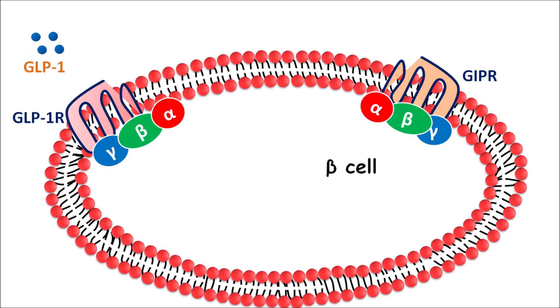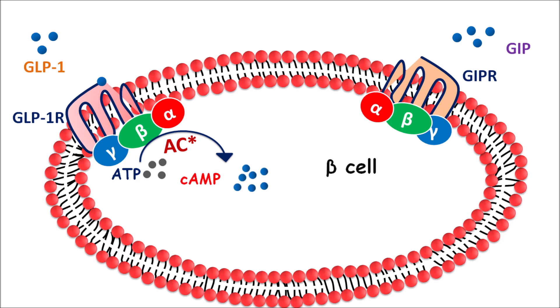GLP1 is one incretin and GIP is another incretin. When GLP1 binds to GLP1 receptors, they are activated resulting in the stimulation of the adenylyl cyclase system. This adenylyl cyclase can convert ATP into one of the important secondary messengers, cyclic AMP. Similarly, GIP can activate the GIP receptors which again leads to the activation of cyclic AMP. So both incretins can increase cyclic AMP levels within the beta cells. This cyclic AMP then activates a group of enzymes — protein kinase A — which are phosphorylating enzymes that control various cellular activities by controlling different types of ion channels.